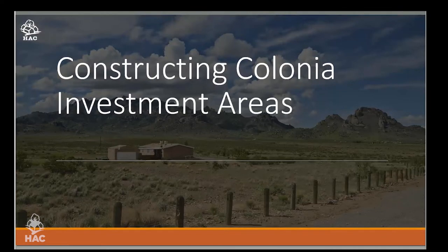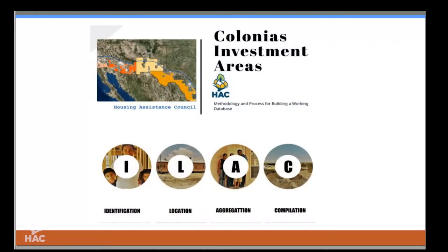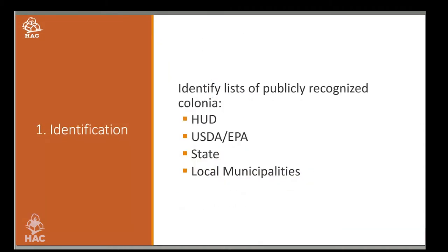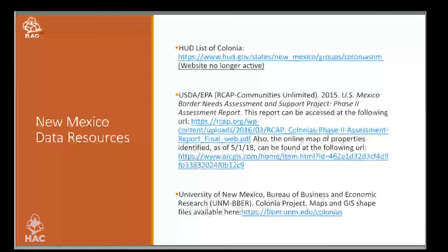We took a four-stage process in developing the Colonia investment areas from a geographic perspective: identification, location, aggregation, and compilation. For identification, the rule mandates the use of publicly recognized lists of Colonias. We compiled those publicly identified lists from HUD, USDA, EPA, state lists, and local municipalities. The bar charts on screen show how many Colonia communities in New Mexico we identified — somewhere between 140 and 150 across different sources, many of which overlapped, identifying the same Colonia.